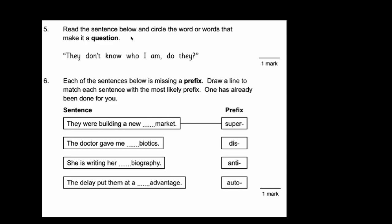Number 5. Read the sentence below and circle the word or words that make it a question. Now if you look at the sentence: they don't know who I am do they. This first bit here, 'they don't know who I am' that's just a statement. That's definitely not a question. The only reason we know it's a question is they add this bit on the end: 'do they?' They've asked a specific question relating to this bit. So this bit here, 'do they', that is the words that tell us it's a question.